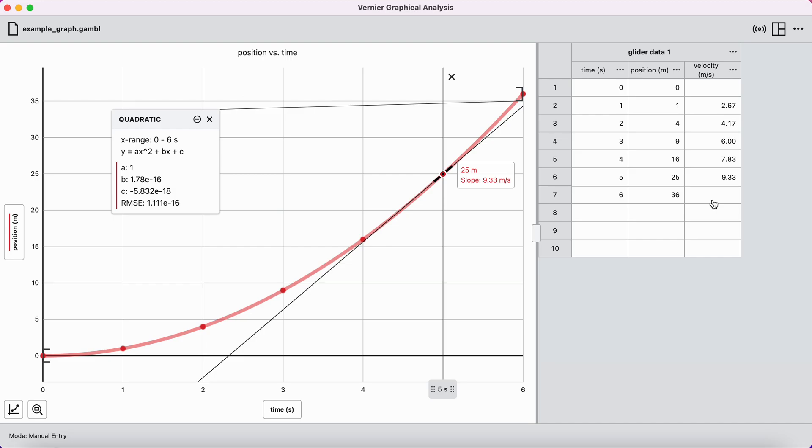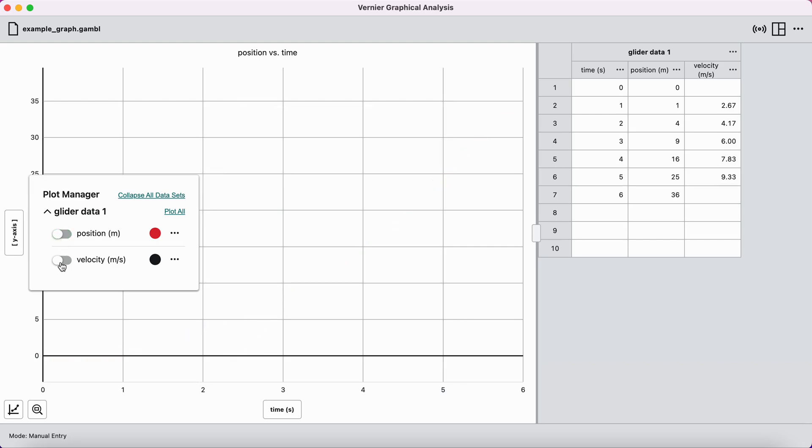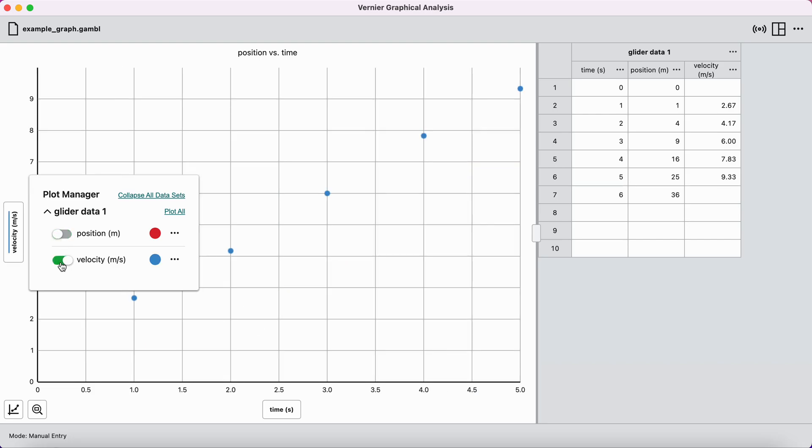And so, you have your velocity data. And now, you can use this data to make a graph. And in fact, it's very easy to do. If I want a velocity versus time graph where it says position on the y-axis here, I can just click on this. I can turn off the position data. I can turn on the velocity data. And it will have created for me a velocity versus time graph.